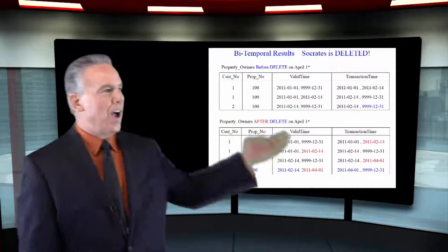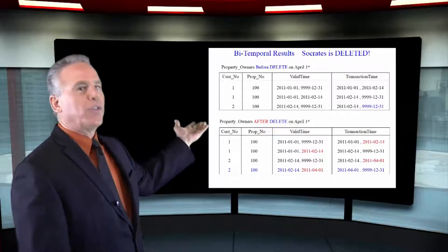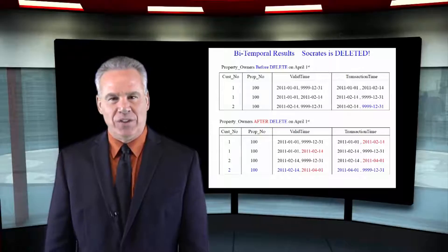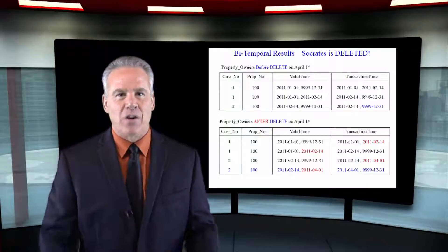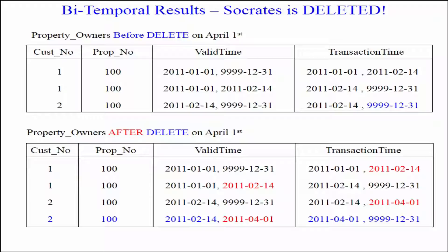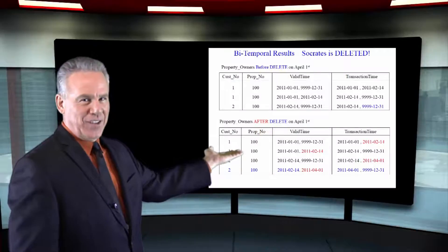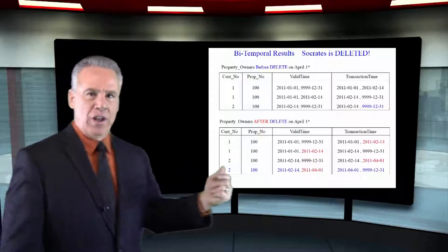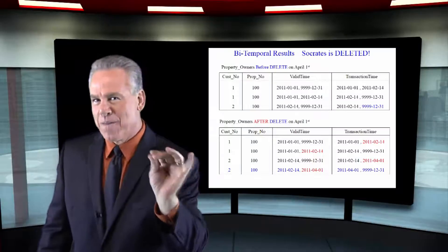In the top, I'm showing you the table with the three rows before the delete occurred. In the bottom, you can see exactly what would happen in our bitemporal table when we did the delete. There are now four rows. Let's take a look at rows three and four.